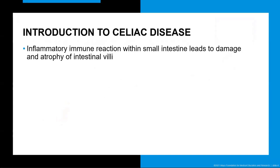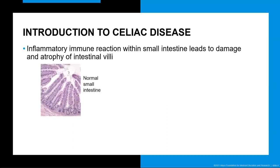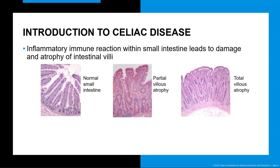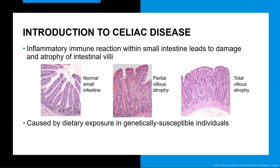Celiac disease is caused by an inflammatory response by the patient's own immune system, leading to damage of the small intestinal villi. The figure to the left shows a biopsy of a normal small intestine with intact villi. The middle and rightmost figures represent the partial and total villus atrophy that can occur in celiac disease. Celiac disease develops in an individual having both the genetic susceptibility and the proper environmental exposure. The environmental exposure is dietary gluten, a cereal grain protein from wheat, barley, and rye.